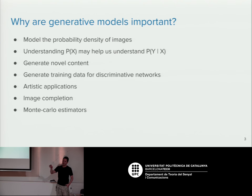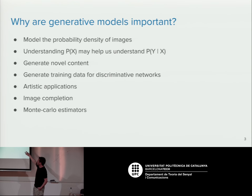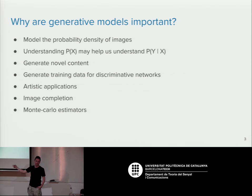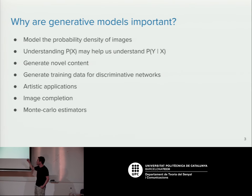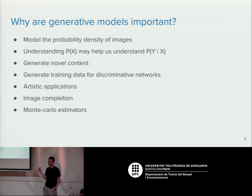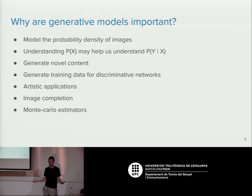Understanding something about the probability of samples — P(X) — can often help you model something you care about, like P(Y|X), where Y could be the class of an image, what objects it contains, a caption, or whatever, conditioned on the image. One of the most interesting applications is generating novel content — using generative models you can actually create new images we've never seen before.